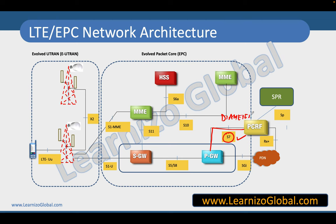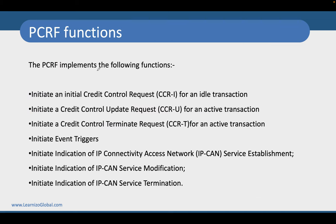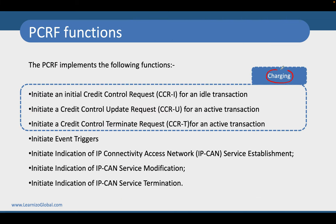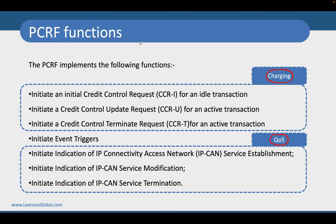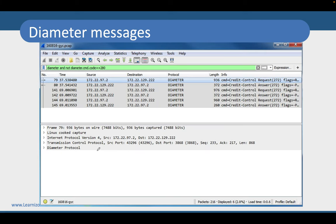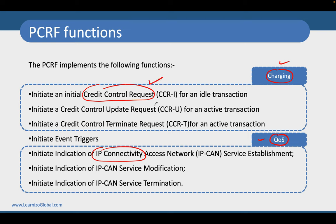In the future, diameter protocol will become obsolete and instead we will use HTTP-based protocol in 5G. PCRF does two functions: charging and quality of service management. Charging messages include CCR — credit control request — messages, while QoS messages are typically IP-CAN messages: IP-CAN session creation, modification, and termination. You can see these diameter messages — credit control request, credit control answer, and credit control update — in Wireshark traces when analyzing the PCRF architecture.